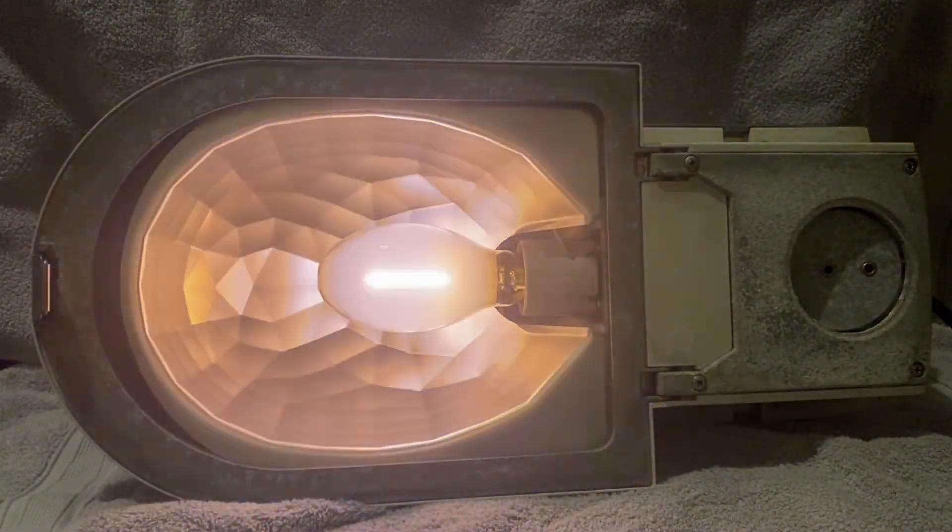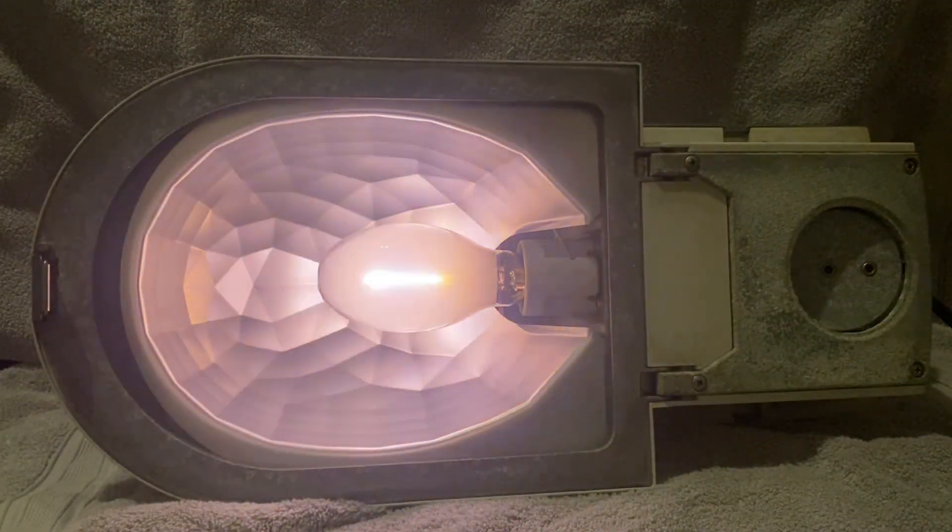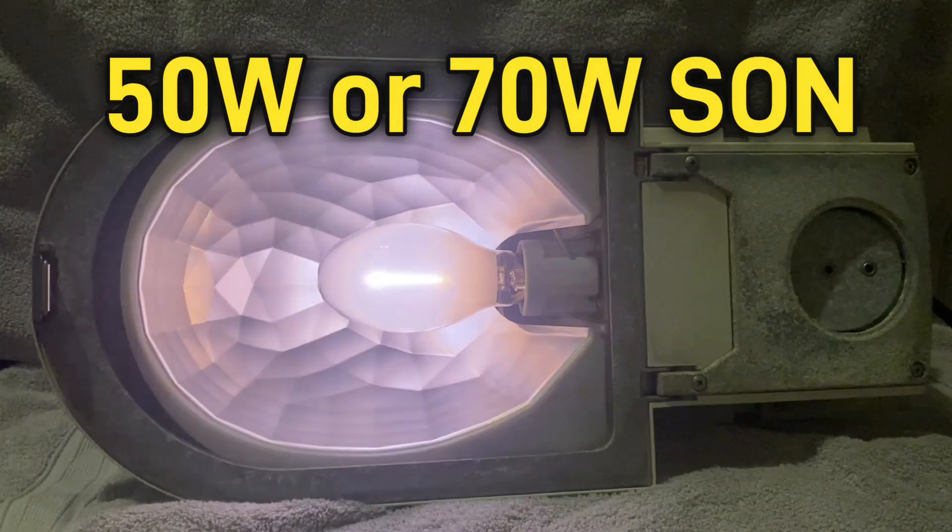This is a WRTL Vectra. They come in three sizes, this being the smallest. 50 watt and 70 watt SON can be used in this one.